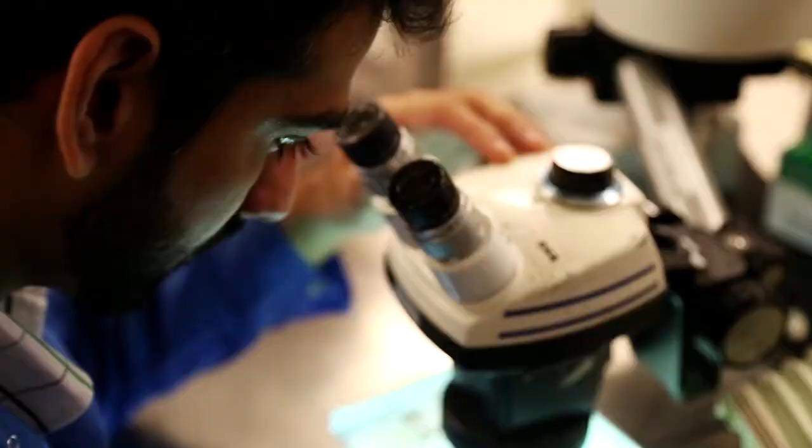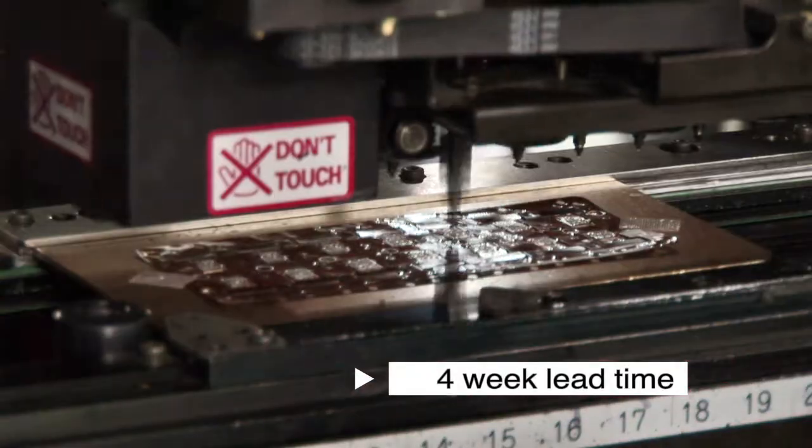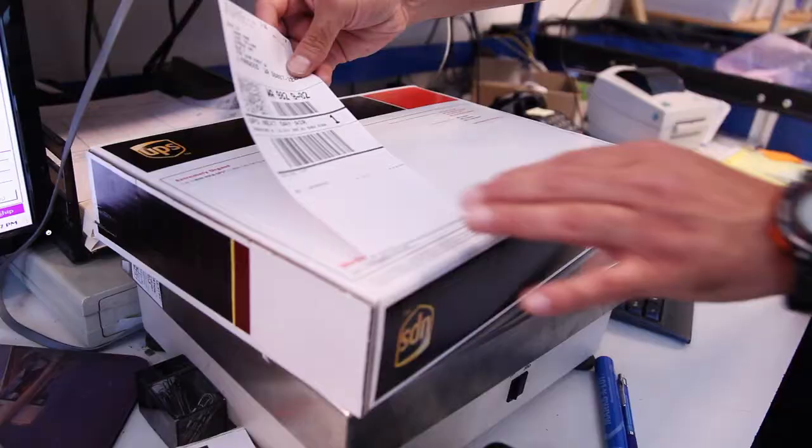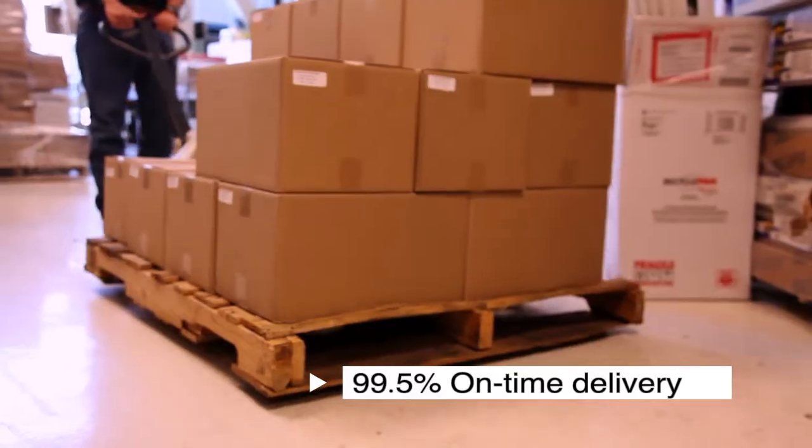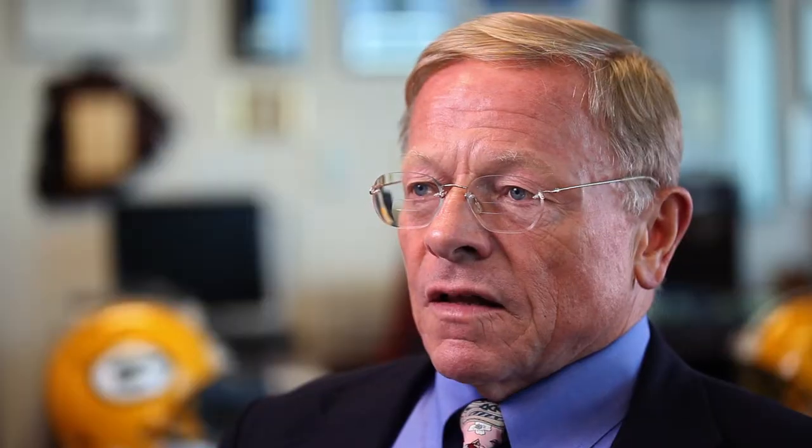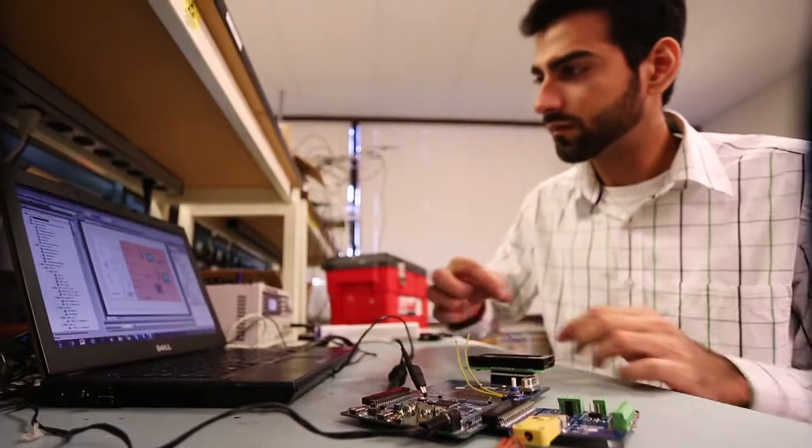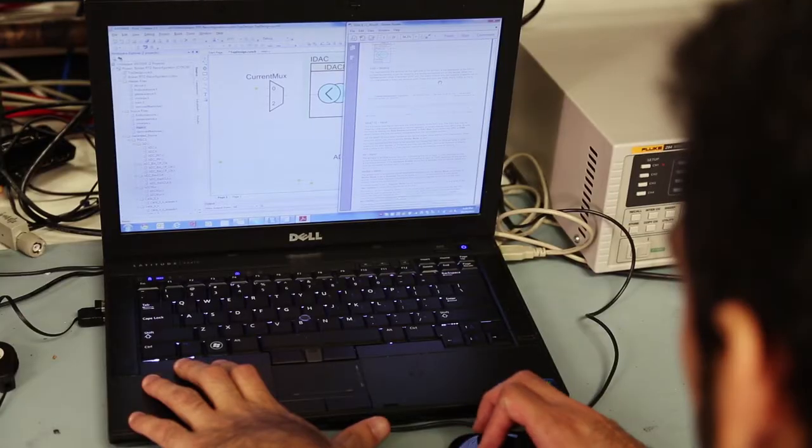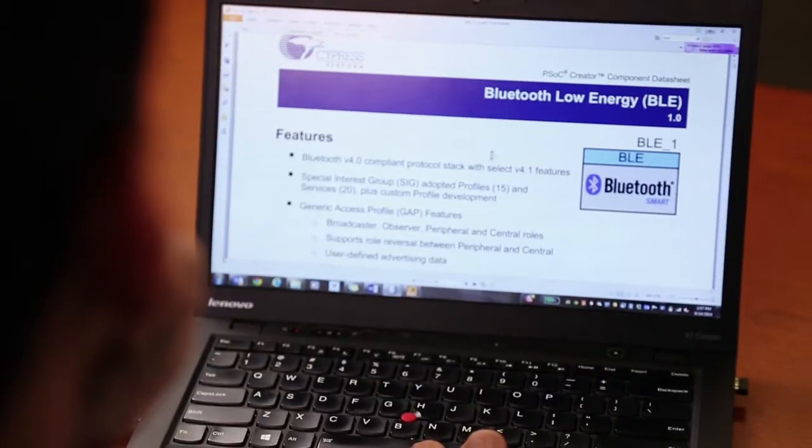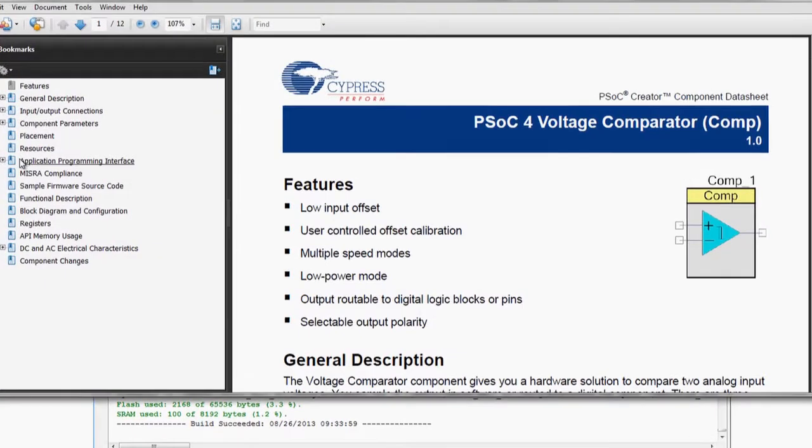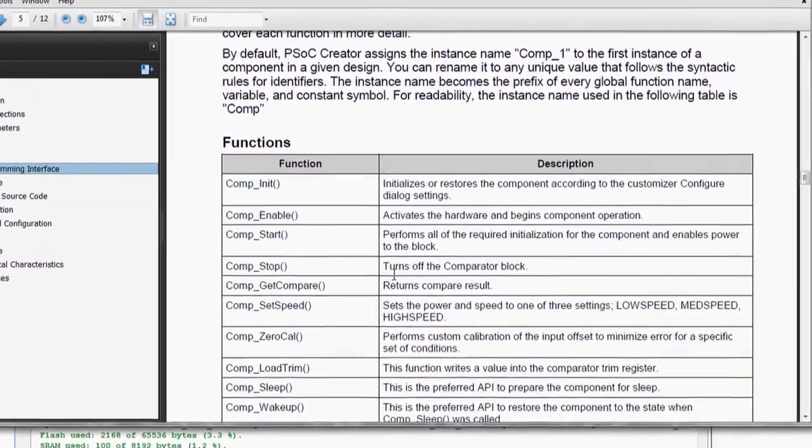They said our lead times were too long, we dropped them from six to eight weeks down to four. They didn't like our on-time delivery. At that time we were doing 90%, 95% on-time delivery, and we now do 99.5% on-time delivery. They didn't like some of our help desks, they couldn't get 24 by 7 help, so we now have 24 by 7 worldwide help. They didn't like some of our application notes and data sheets, so we've rewritten hundreds of documents to higher standards to make it right for our customers.